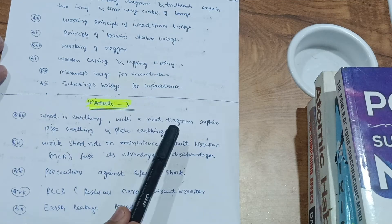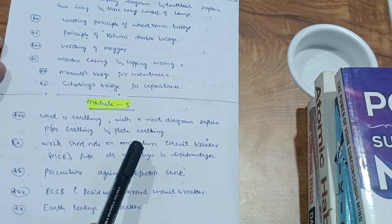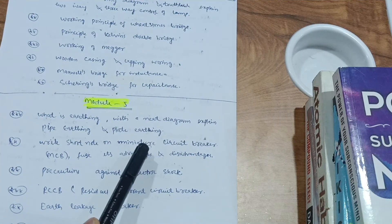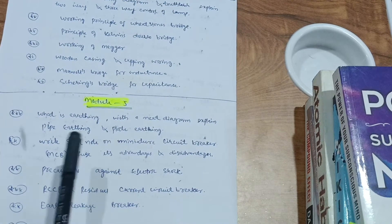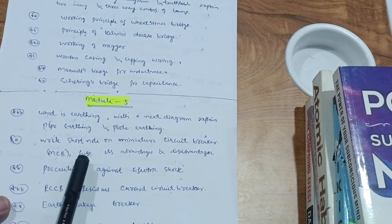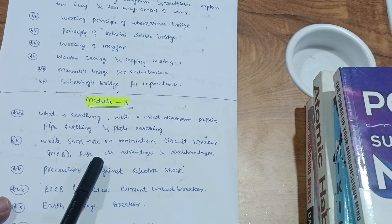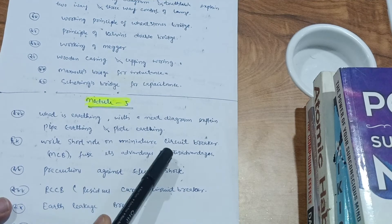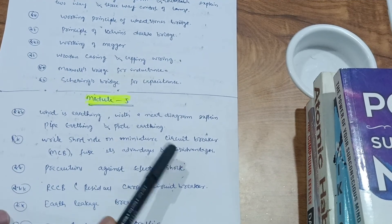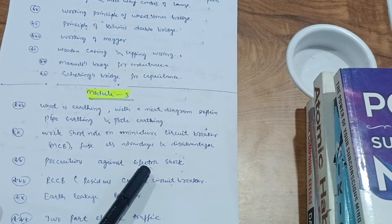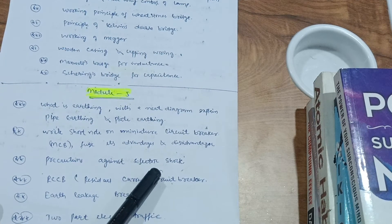In the second part, write short note on miniature circuit breaker, that is MCBs. You have to focus on MCBs like fuses. You have to focus on this theory concept, write down on your A4 sheet and try to sort out the problems. Its advantage and disadvantage also you have to focus on. Next one is precautions against electric shock.